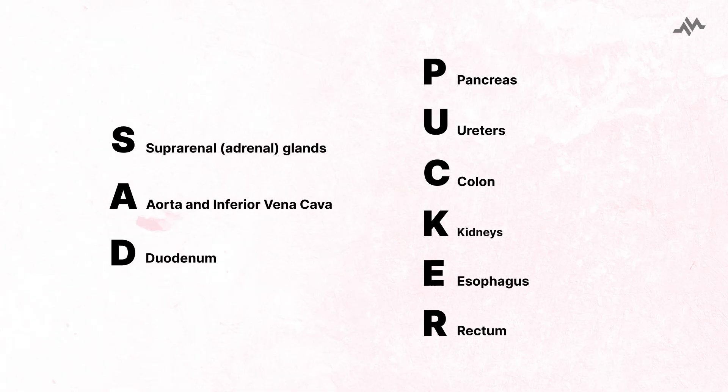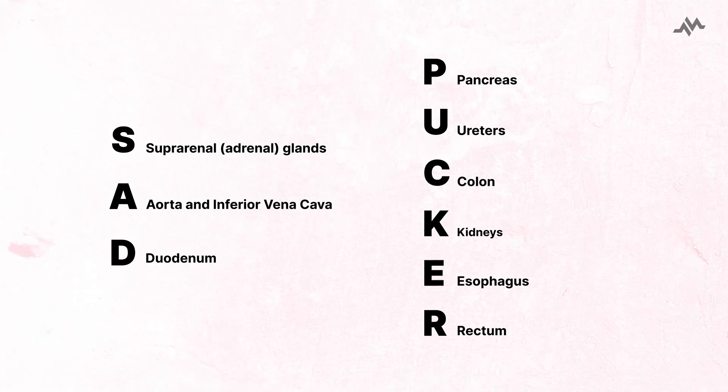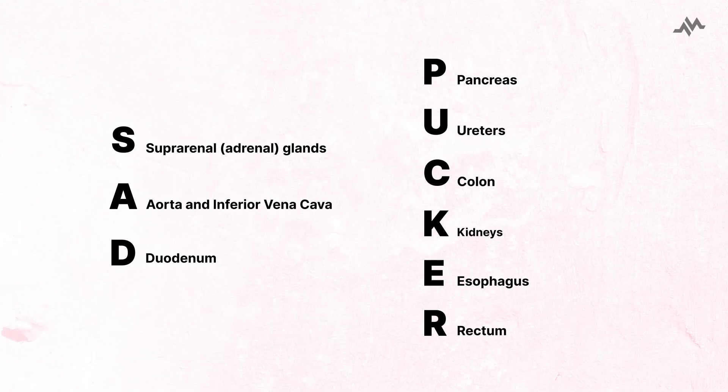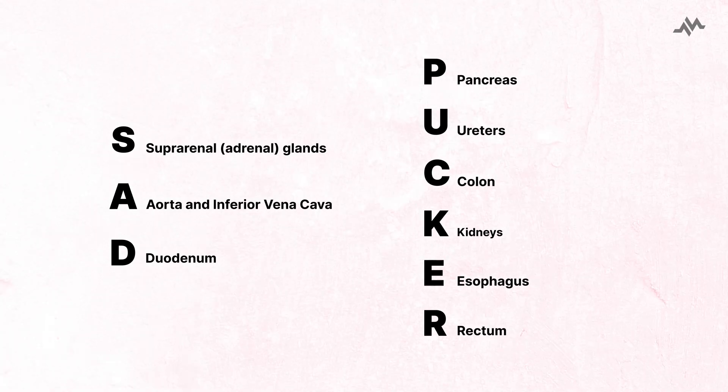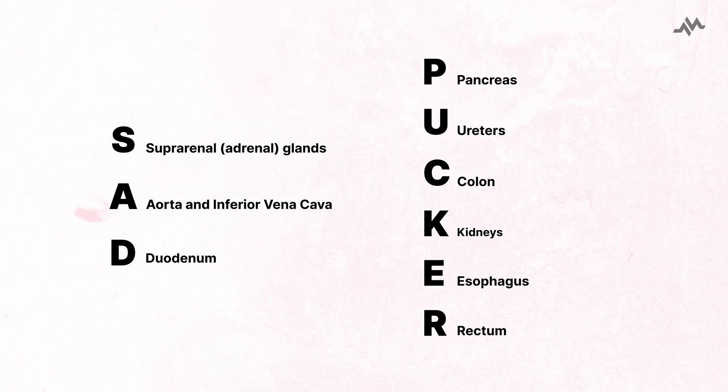So the next time you come across a question asking about the structures within the retroperitoneal space, just remember the word: sad pucker.